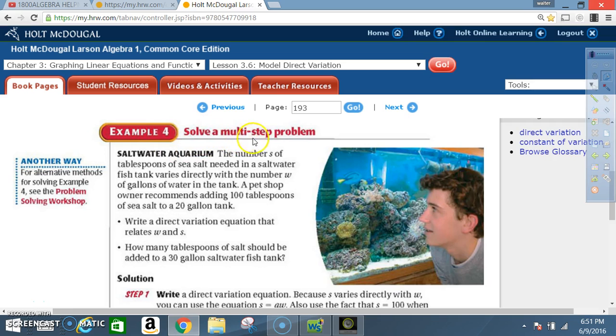Example 4. Solve a multi-step problem. Saltwater aquarium. The number S of tablespoons of sea salt needed in a saltwater fish tank varies directly with the number W of gallons of water in the tank. A pet shop owner recommends adding 100 tablespoons of sea salt to a 20-gallon tank. Write a direct variation equation that relates W and S. How many tablespoons of sea salt should be added to a 30-gallon saltwater fish tank?